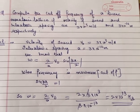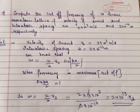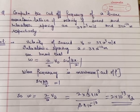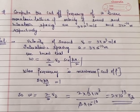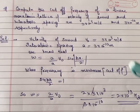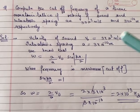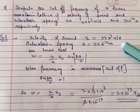If velocity of sound and interatomic spacing are 3×10³ meters per second and 3×10⁻¹⁰ meters respectively. Now we know that the velocity of sound is given to us and interatomic spacing is also given to us.